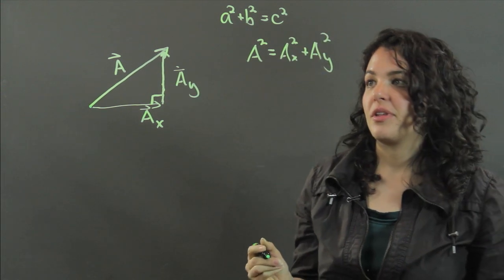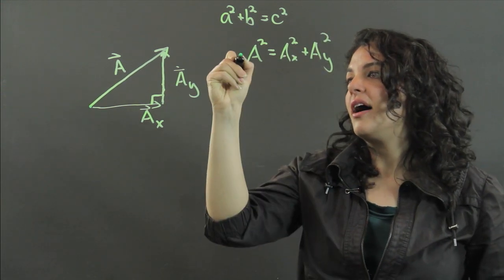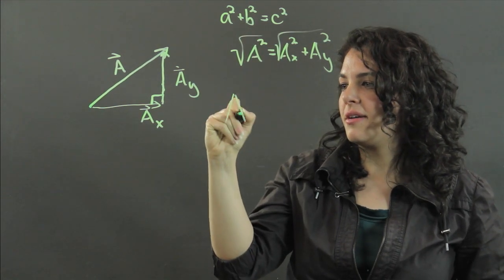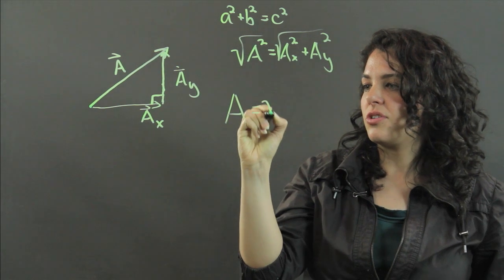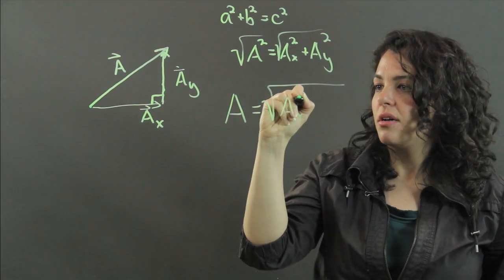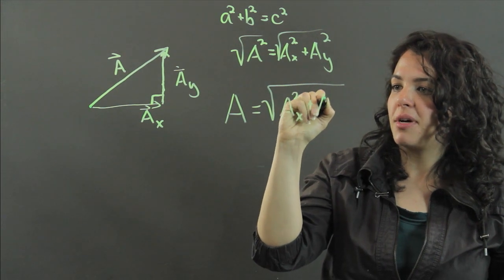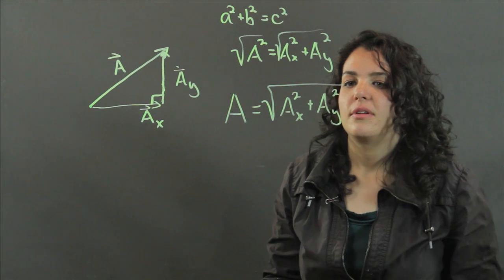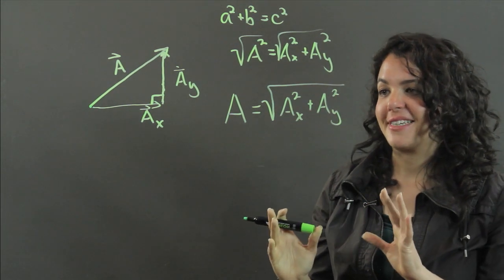So to get A, I then take the square root of both sides, and I'll find that A, my magnitude of A, is just the square root of the sum of my components squared, or the sum of the squares of my components, more correctly.